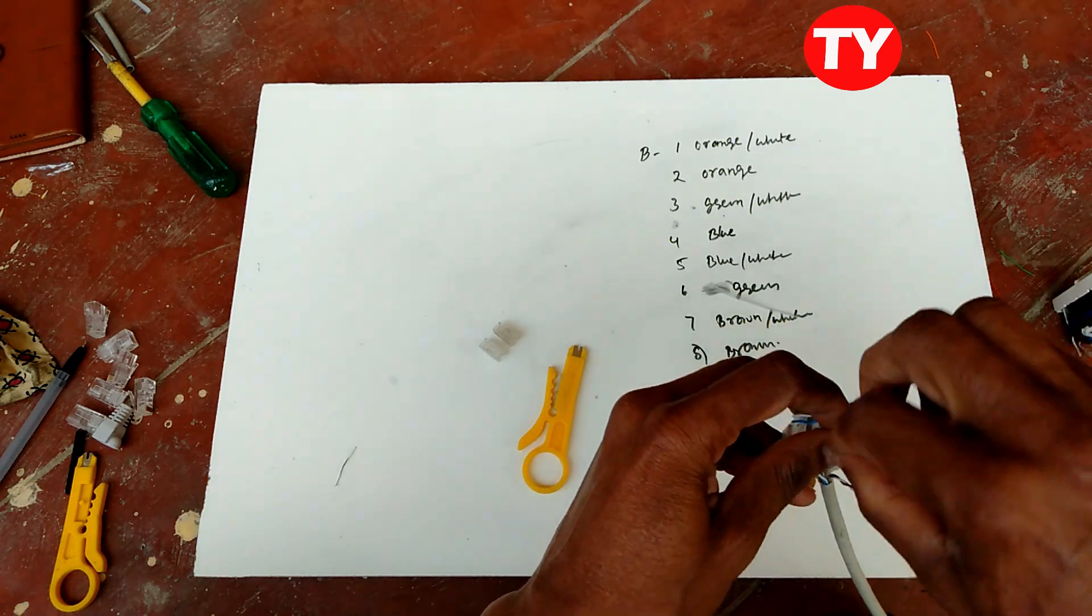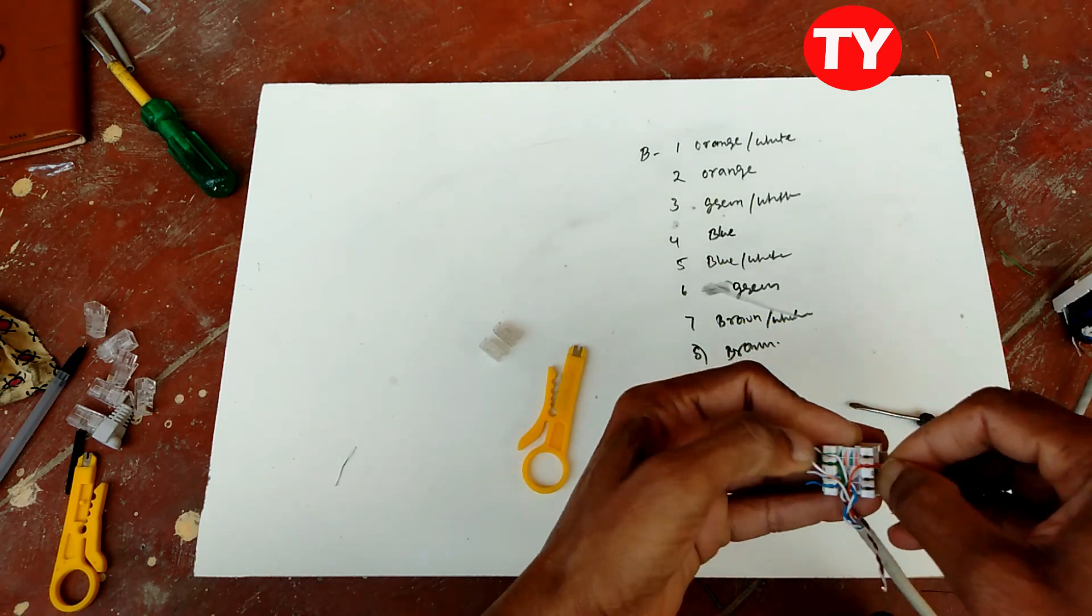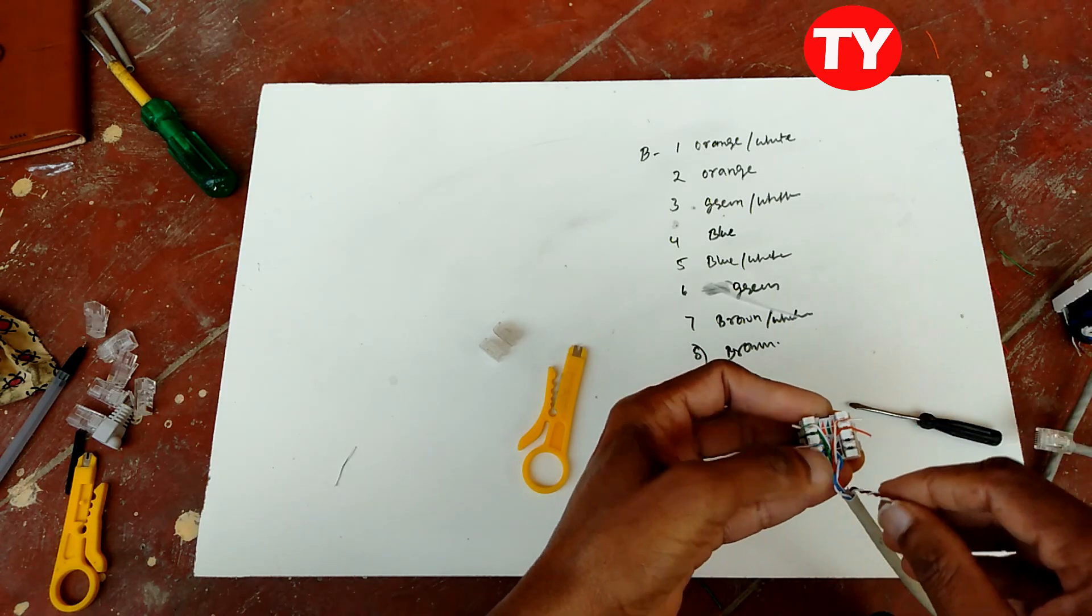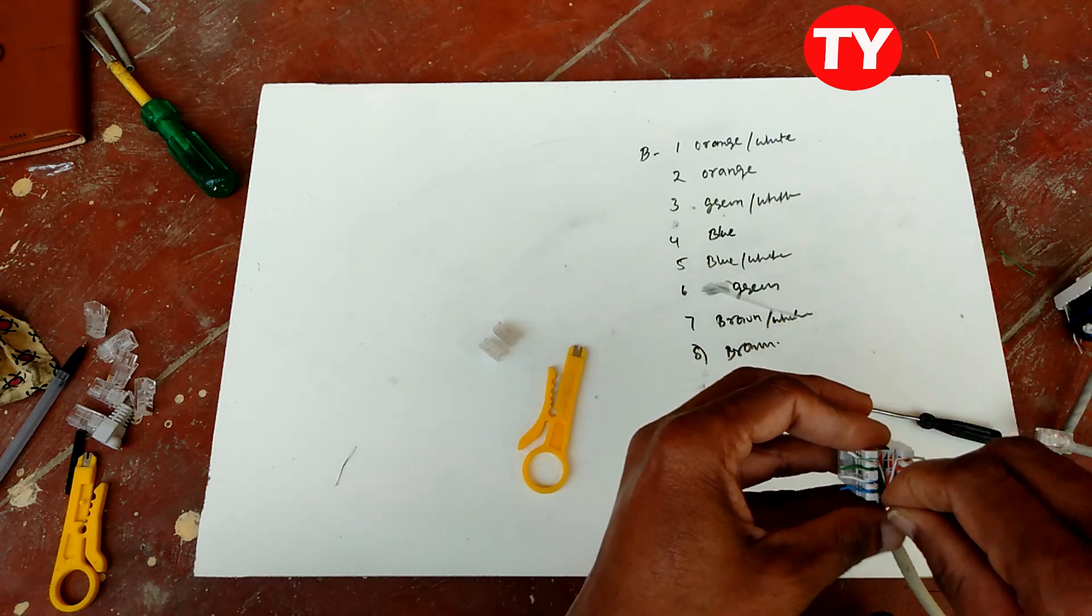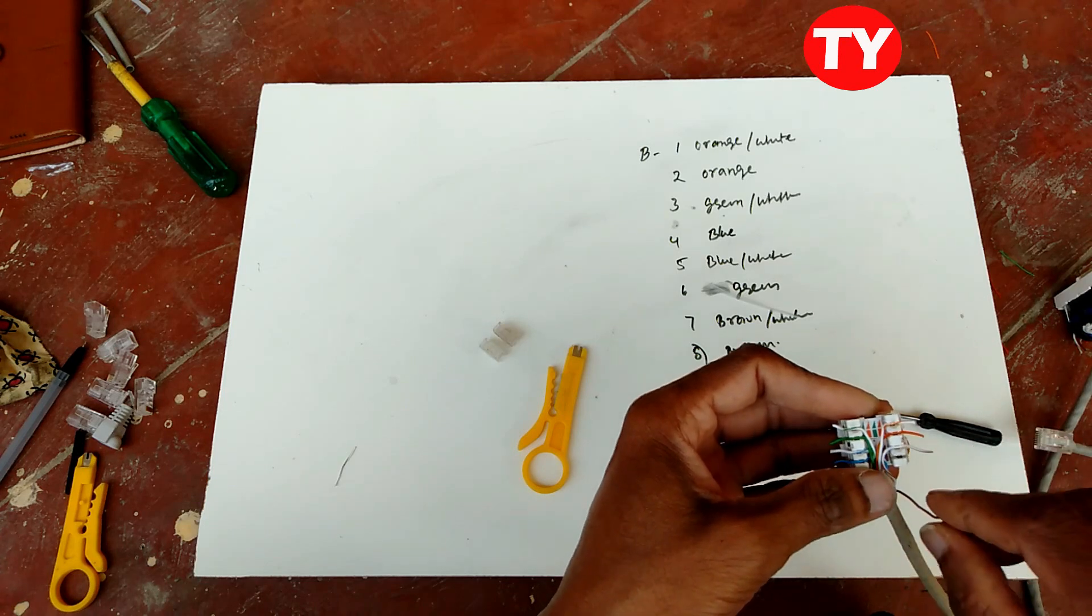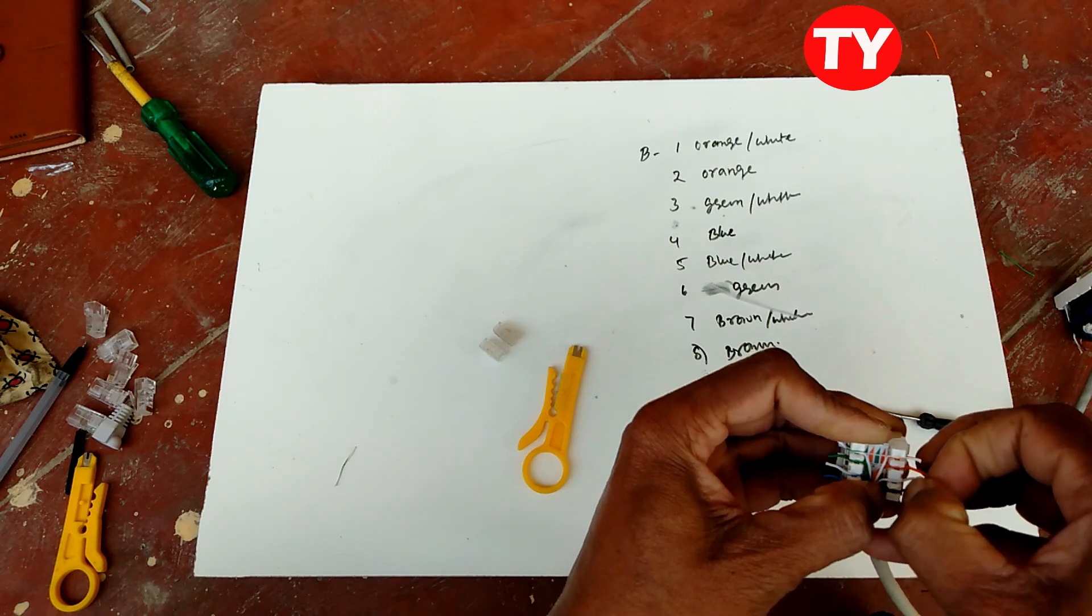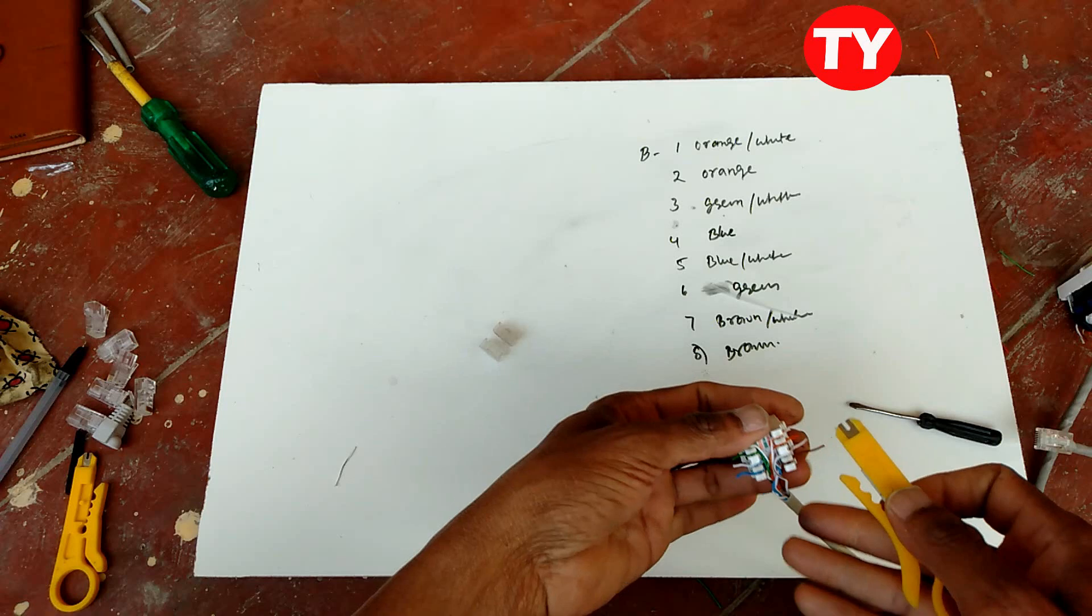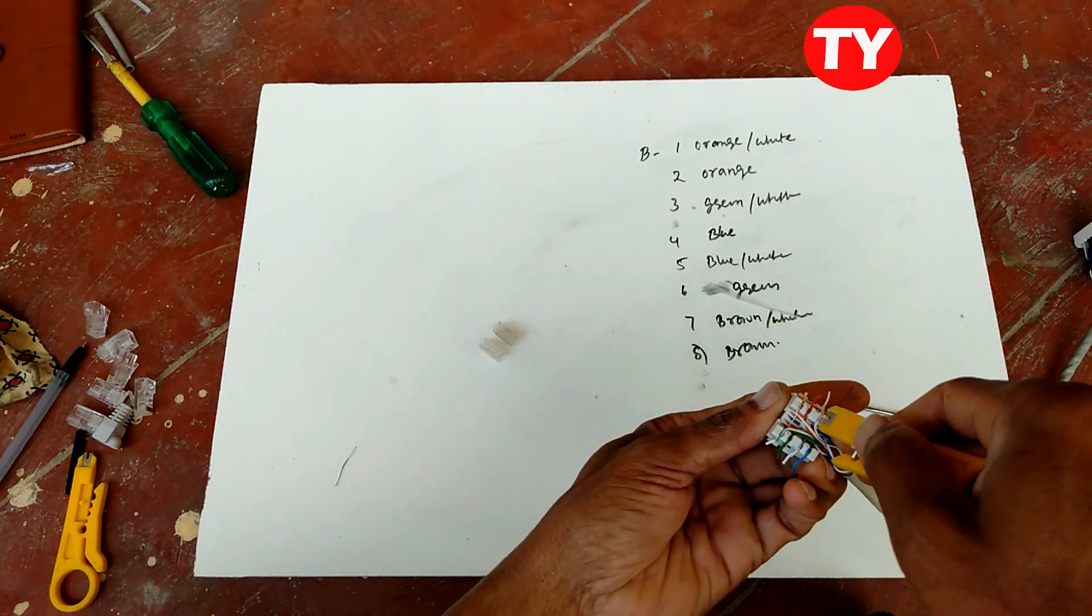Then here orange, and then orange-white, then brown-white and brown. After, just press inside cable. That's all.